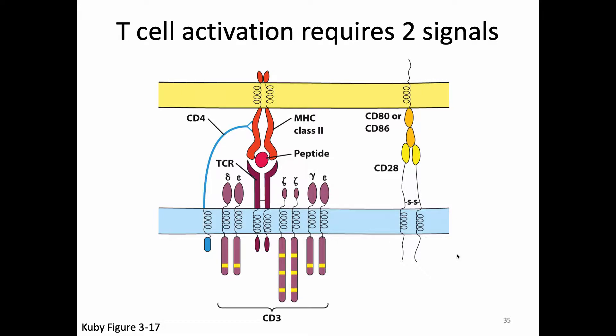T-cell activation requires two signals. Our T-cell needs to get a signal from MHC plus peptide through the T-cell receptor as well as CD3 and CD4 or CD8. But our T-cell also needs to get a signal through CD28, which is our signal 2 protein, in order to be fully activated. The ligands for CD28 are CD80 or CD86 — either one works. They are two very similar proteins, also known as B7-1 and B7-2.